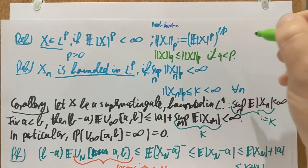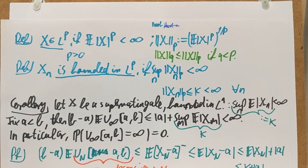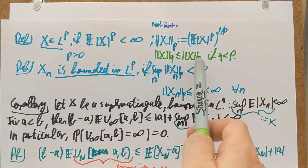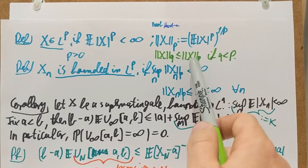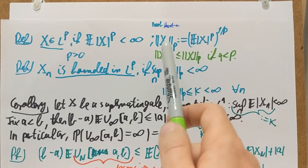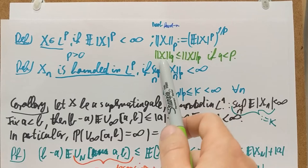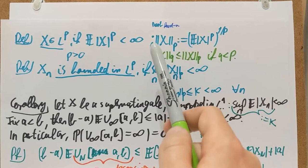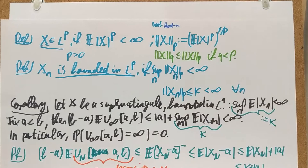If you look back at what Lyapunov's inequality was, this is exactly what it said. This is going to be important: if p is 2 and q is 1, that means the 2-norm is larger than or equal to the 1-norm. So being in L2 is more restrictive than being in L1. Anything that's in L2 is also in L1, but if you're in L1, you might not be in L2.